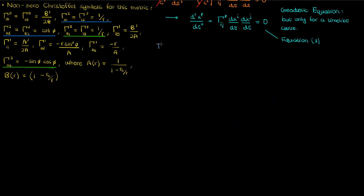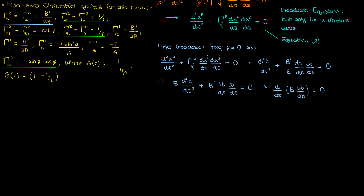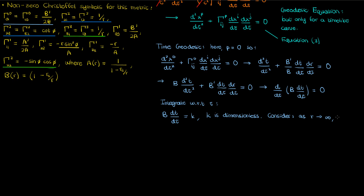Now for the time coordinate geodesic equation. The only nonzero Christoffel symbols with superscript 0 are Γ⁰₀₁ and Γ⁰₁₀. Plugging those in and replacing x's with coordinate variables, then multiplying both sides by b, the left-hand side is the product rule applied to b times dt/dτ. Integrating both sides with respect to proper time gives b (dt/dτ) = k, a constant conserved with proper time. The constant k is dimensionless, which makes finding its physical meaning trickier.